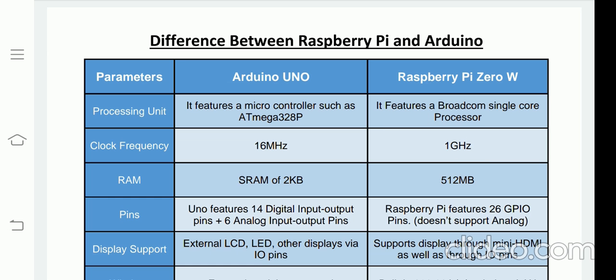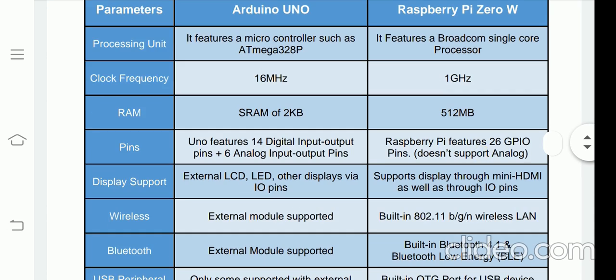The RAM for Arduino is 2 KB, whereas the RAM for Raspberry Pi is 512 MB. For Arduino, there are 14 digital input-output pins and 6 analog pins — the same thing reflected in the presentation. Arduino has 14 digital pins and 6 analog pins.